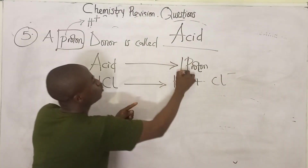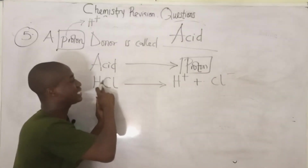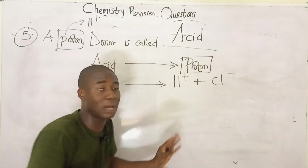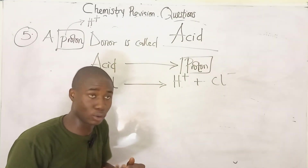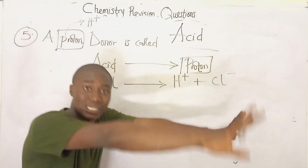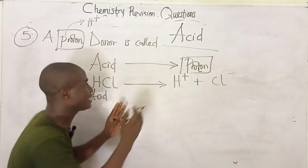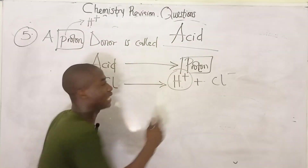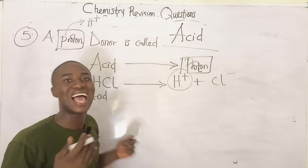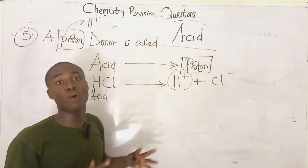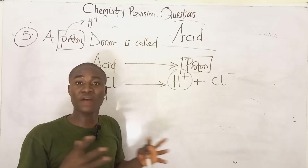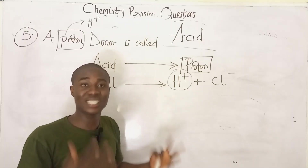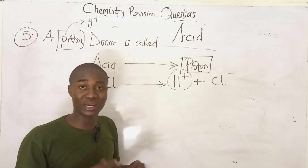Acids donate protons — they have protons and give them out. That is why they are called proton donors. The proton is in the form of the hydrogen ion (H⁺). If you found this video helpful, click the subscribe button and share these lessons with your friends. Thanks for watching.